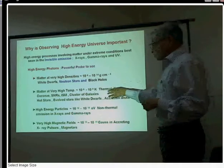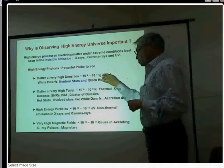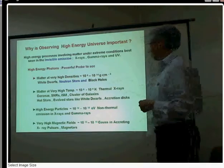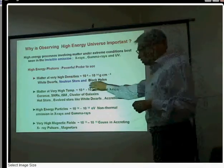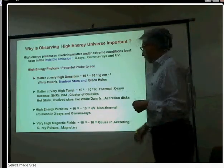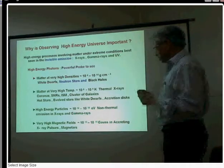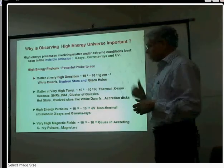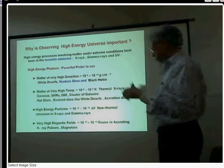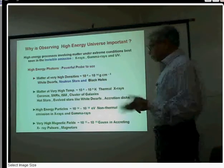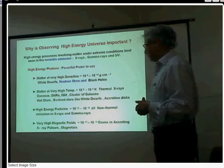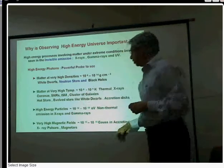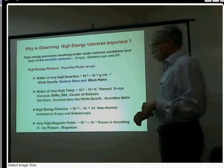Such objects are the brightest X-ray sources, found in binary star systems. High-temperature gas radiates in X-rays. For example, the Sun's corona is at 2 million degrees. Similarly, thermal X-rays are produced in supernova remnants, which have temperatures ranging from a million degrees to tens of millions of degrees.